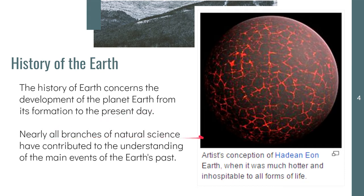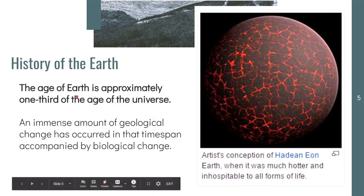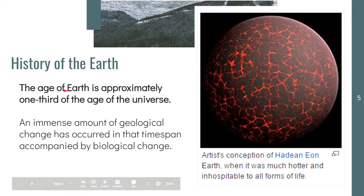Nearly all branches of natural science have contributed to our understanding of the Earth's past. We have established in our lesson on origin of the Earth that the Earth is approximately one-third of the age of the universe. The universe is around 14.3 to 14.5 billion years old, so the Earth is around 4.3 to 4.5 billion years old.